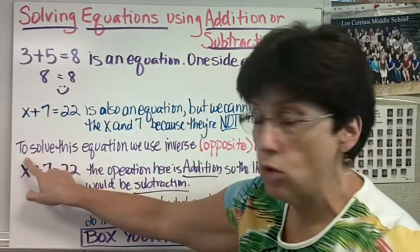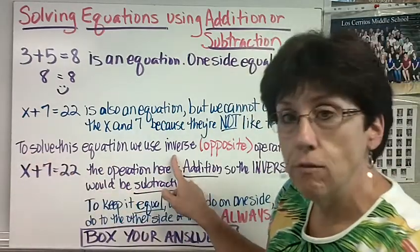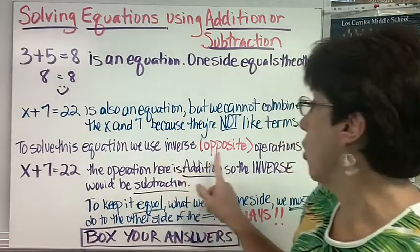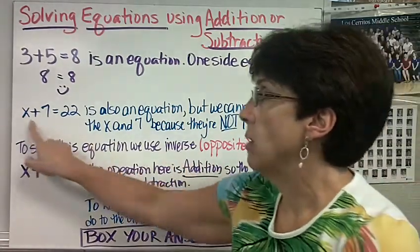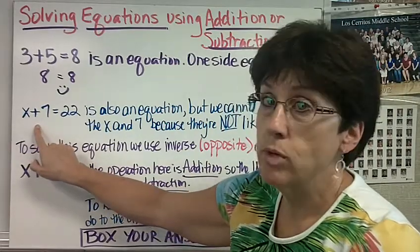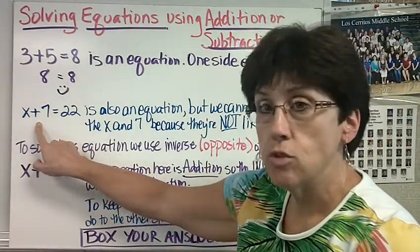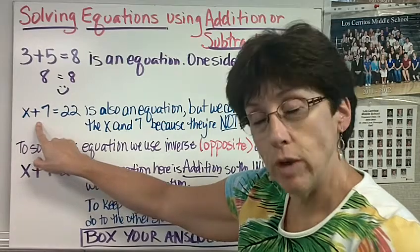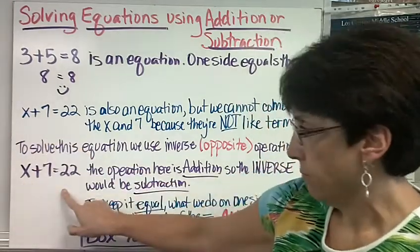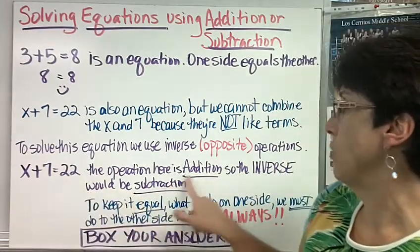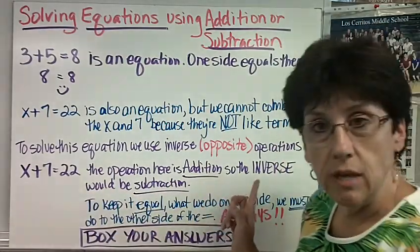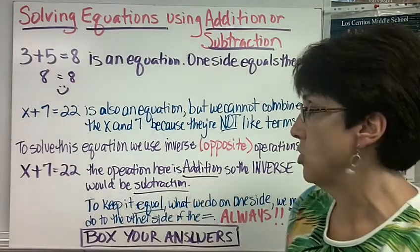And to solve the equation, we use the inverse, which is a synonym for opposite operation. So in this problem, x plus 7, the operation is addition. So the inverse would be subtraction. Here I'm going to say it again. x plus 7 equals 22. The operation is addition. So the inverse operation would be subtraction.